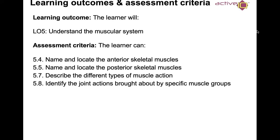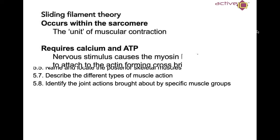Now that I've cleared that up, what are today's outcomes for Part 2 of the Muscular System? Hopefully, you should be able to name and locate the areas of anterior and posterior skeletal muscle — we're going to recap on that again. We'll also describe different types of muscle action and identify joint actions brought about by specific muscle groups.